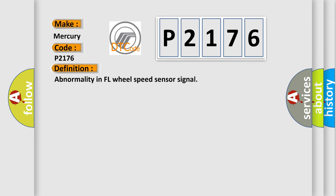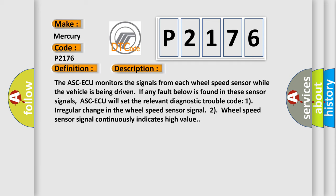The basic definition is abnormality in FL wheel speed sensor signal. And now this is a short description of this DTC code. The ASC ECU monitors the signals from each wheel speed sensor while the vehicle is being driven. If any fault below is found in these sensor signals, ASC ECU will set the relevant diagnostic trouble code.